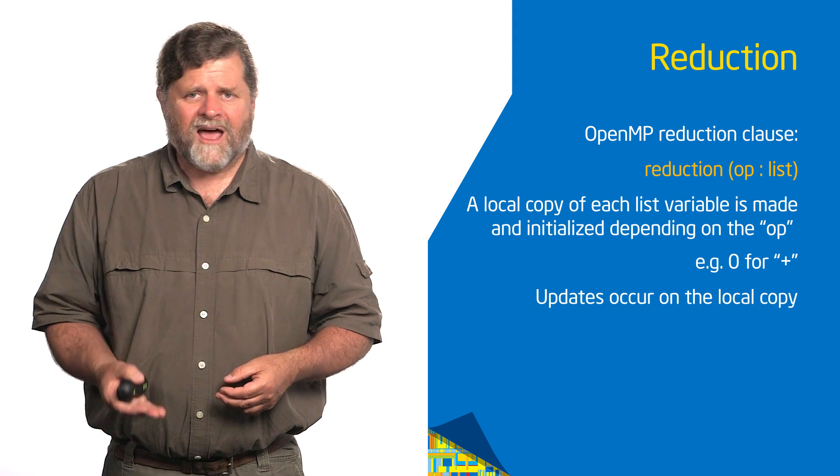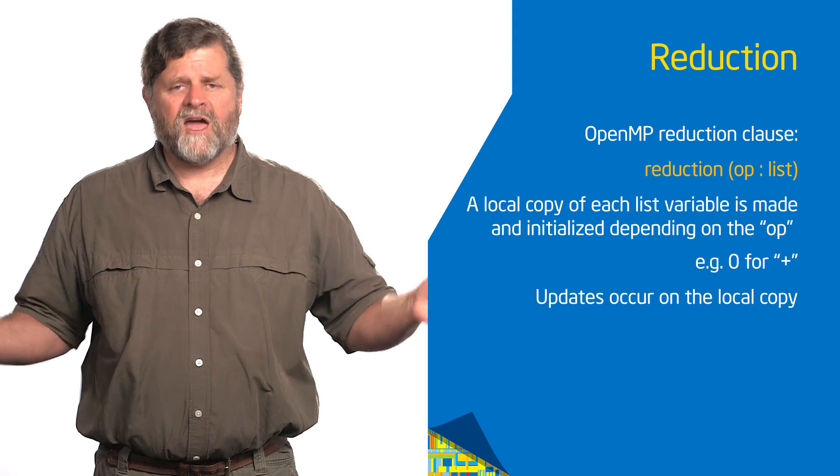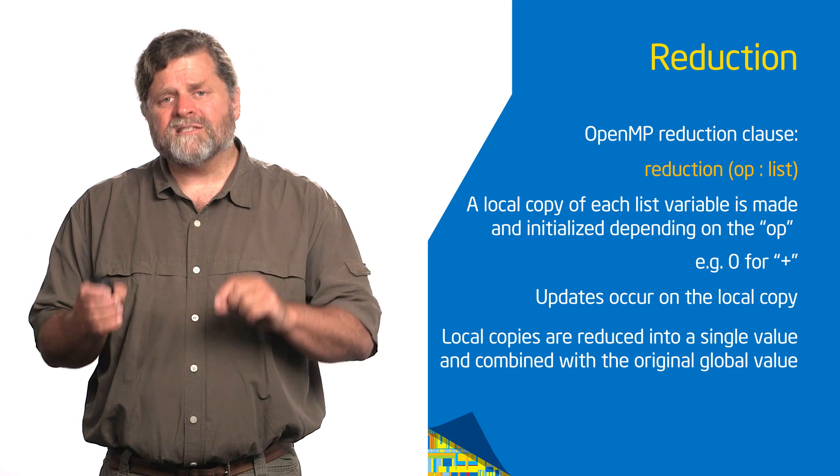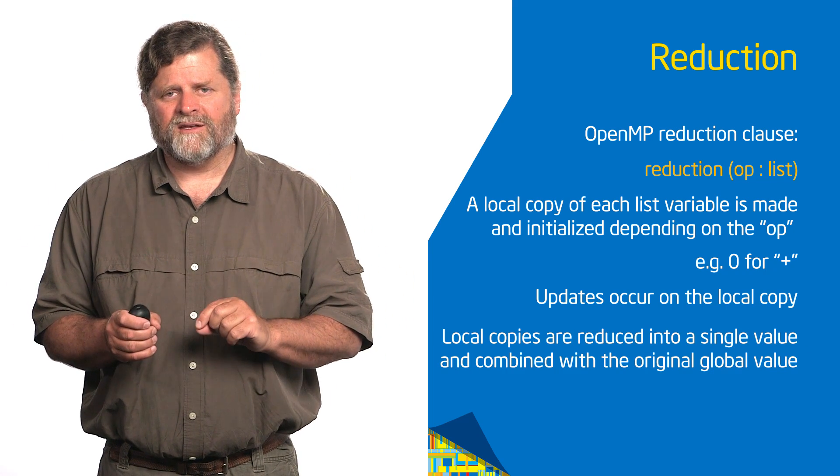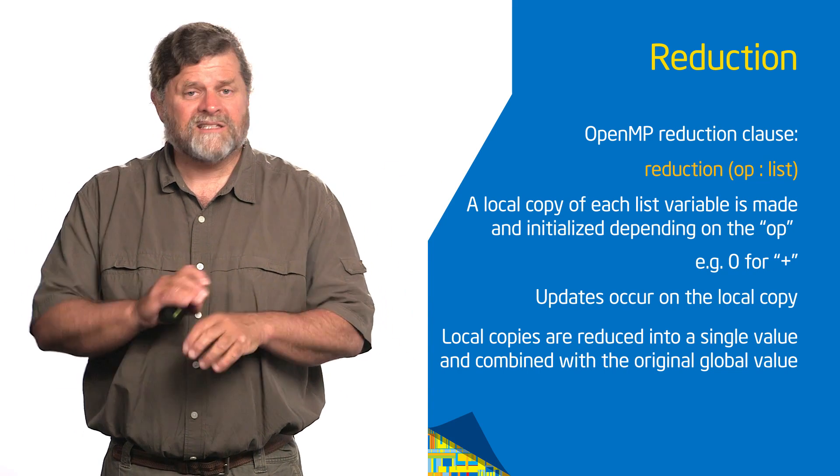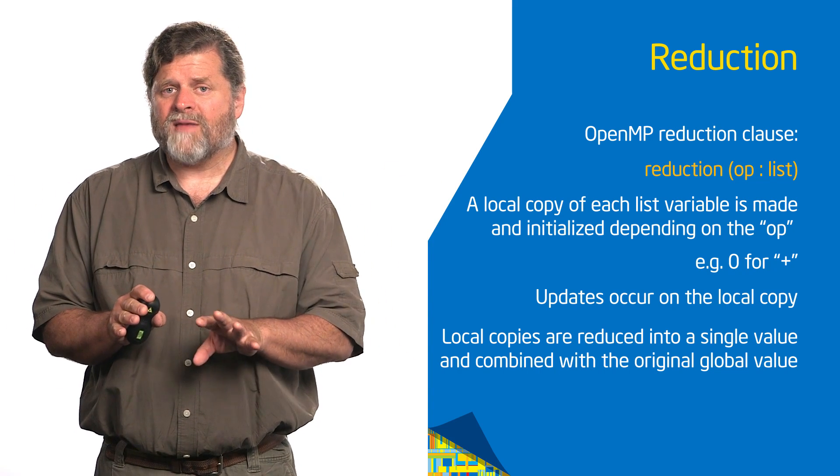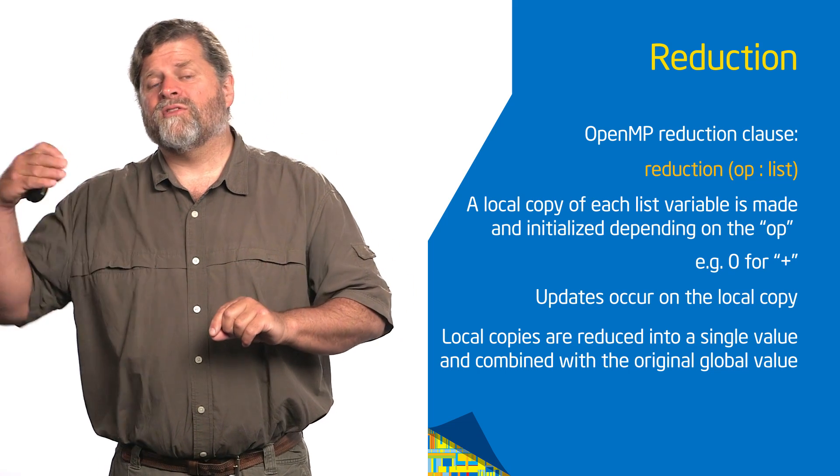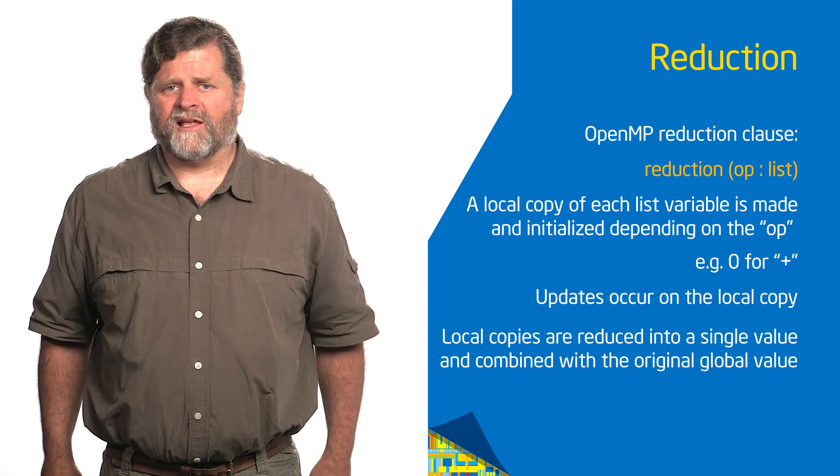So I initialize that local copy with the identity. So now inside that block of code, it does whatever it wants with that local copy. Then when it's done, it combines the local copies from each thread using the reduction operator into a single global copy. And it does that for you. You don't have to do anything magic. Then it combines that with the global copy to give you the final answer.